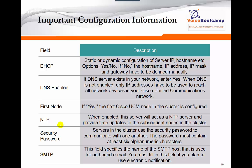During installation you are required to provide information such as how the server should get an IP address — either static or DHCP. Technically, you shouldn't assign a server a DHCP address because if you reboot the server, it might get a new IP address unless you manually reserve that IP on the DHCP server. Best practice in the real world is to assign the server a static IP address.